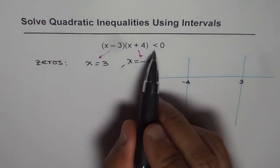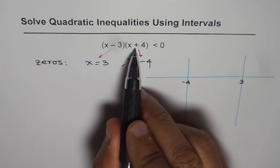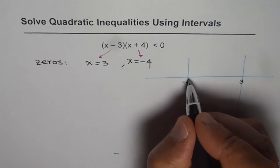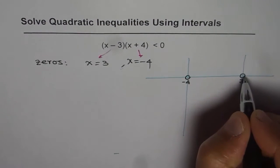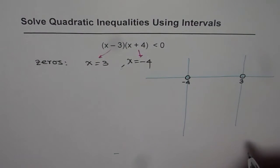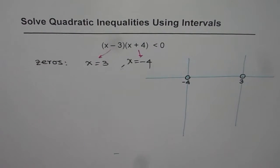Now zero is not a part of solution since we are looking for this quadratic function to be less than zero. So we will make a hole here indicating that either side of this hole could be a part of solution. But this definitely is not a part of solution. So that is the first step.